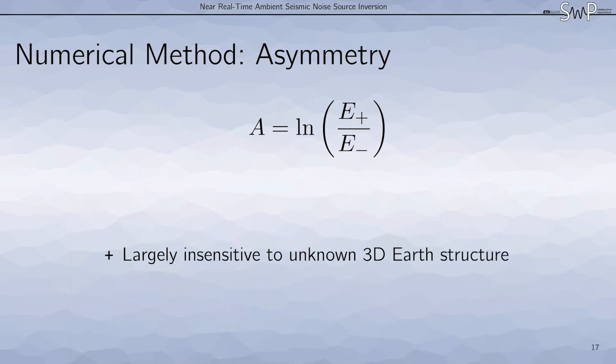One advantage of this measurement is that it is largely insensitive to unknown through the earth structure. This enables us to use a very basic velocity model for the forward modeling of the cross-correlations.